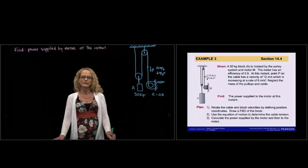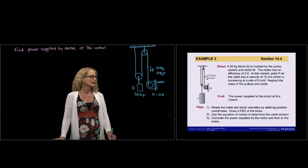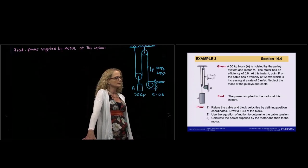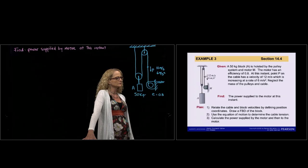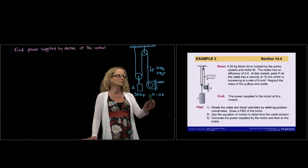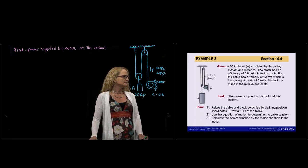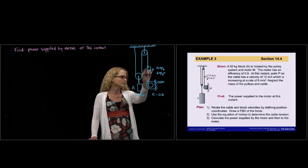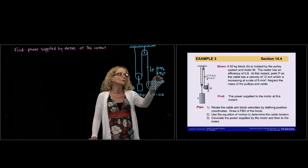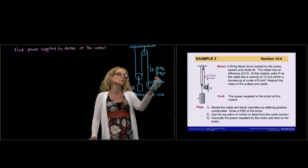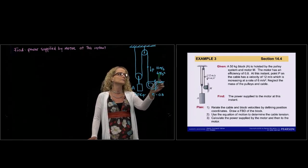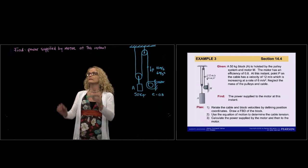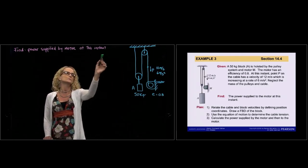Hi, this is example number 3 of section 14.4. As you can see in the PowerPoint, we have a 50-kilogram block hoisted by a pulley system and a motor. At this instant, point P of the cable has a velocity of 12 meters per second and an acceleration of 6 meters per second squared. We are asked to find the power supplied by the motor at this point.